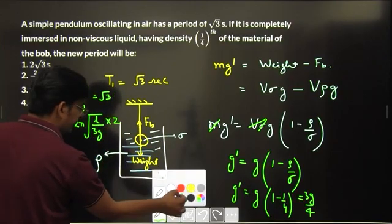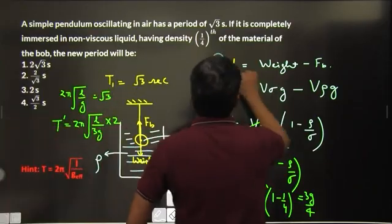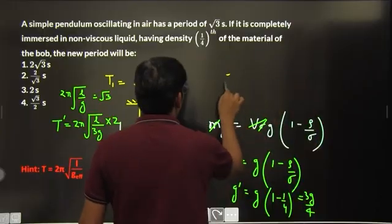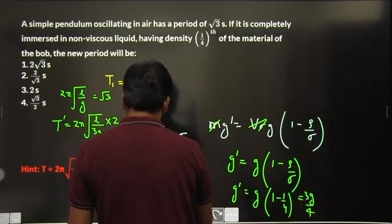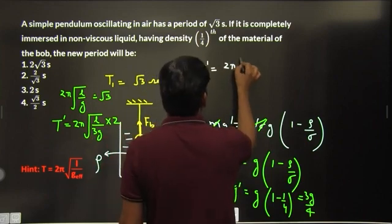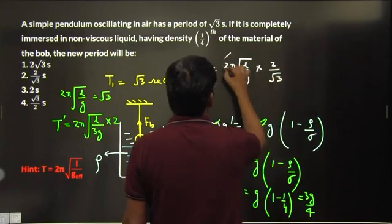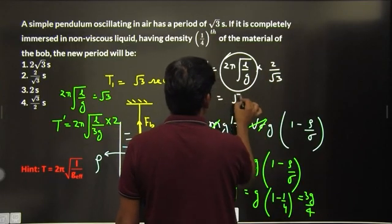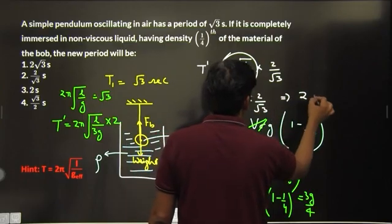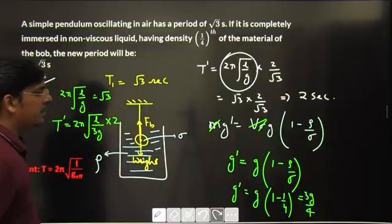So T' = 2π√(L/g) × (2/√3). Since 2π√(L/g) = √3, we get T' = √3 × (2/√3) = 2 seconds. So the correct answer is option 3, T' = 2 seconds.